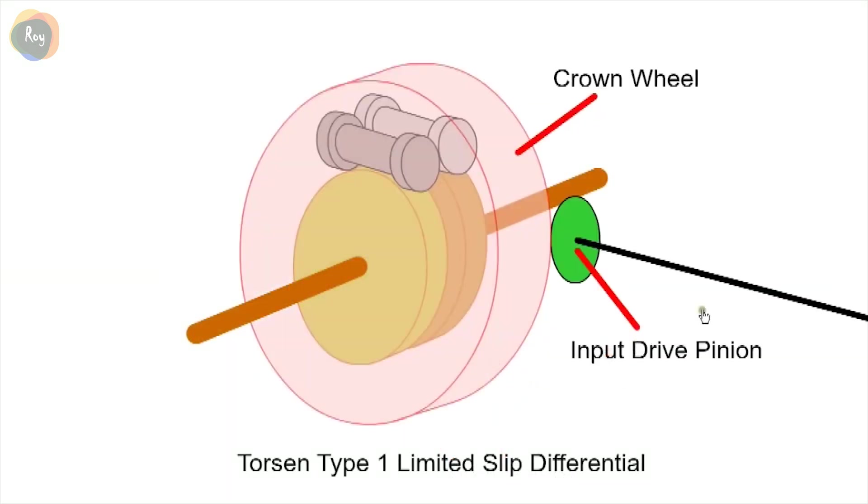During normal operation, the input drive pinion drives the crown wheel and cage. The Torsen will allow for speed difference when cornering. However, if one wheel loses traction, the difference in torque causes the differential to bind together and limit the slip.